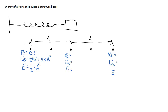At equilibrium, we have no spring potential energy because the spring is unstretched at that spot. So we just have kinetic energy: one-half mv squared. Our total energy at the equilibrium position is therefore one-half mv squared.